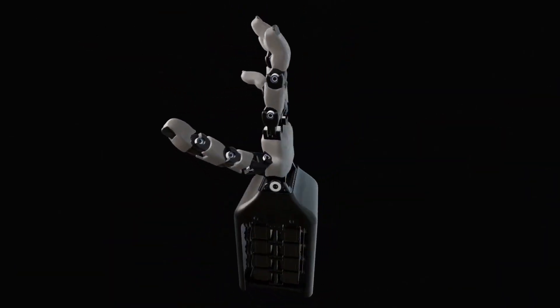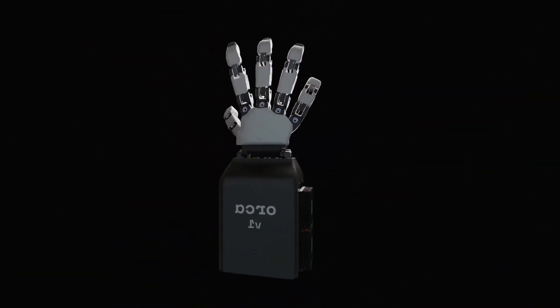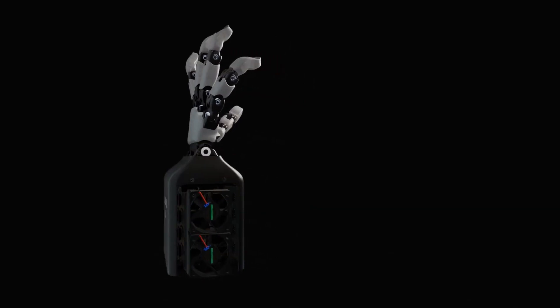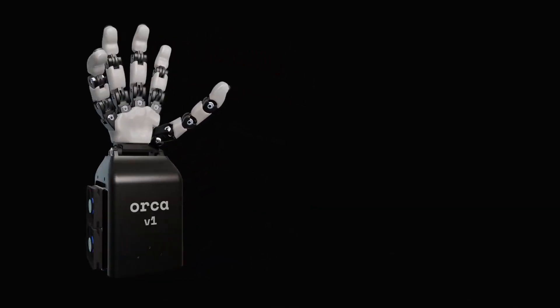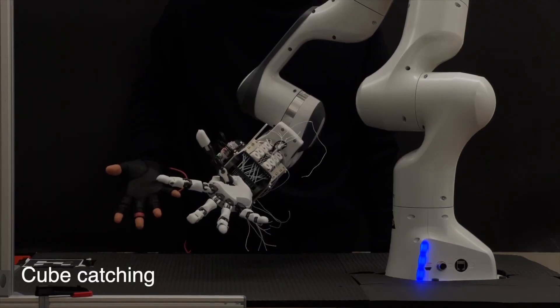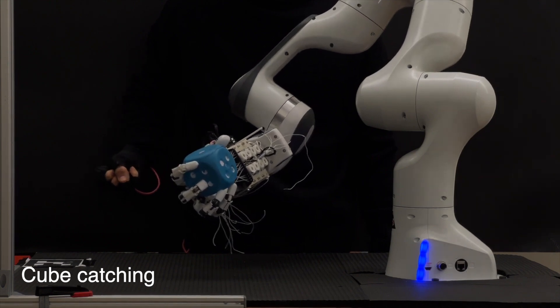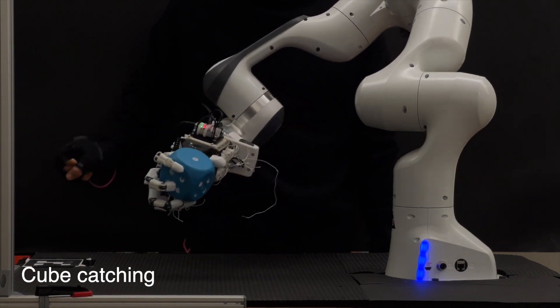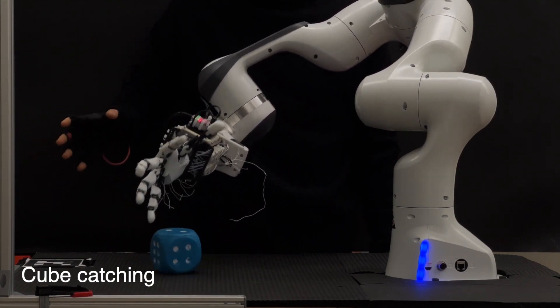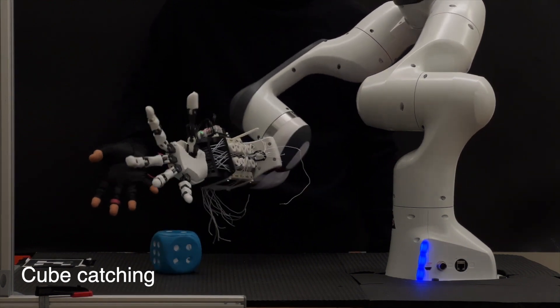This is the Orca hand from ETH Zurich, a dexterous robotic hand with 17 degrees of freedom and tactile sensors embedded at its fingertips. The entire structure is almost entirely 3D printed, yet it can perform more than 10,000 consecutive grasps, equivalent to about 20 hours of non-stop operation.